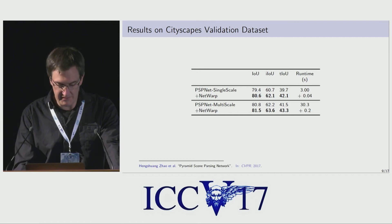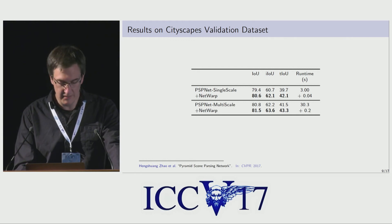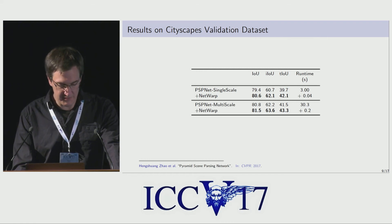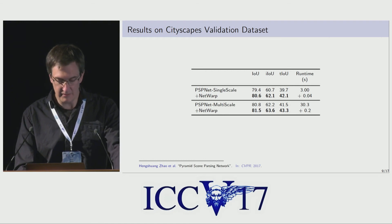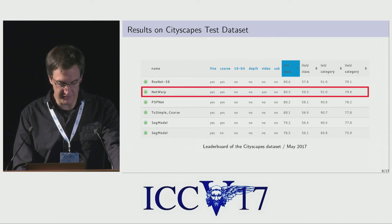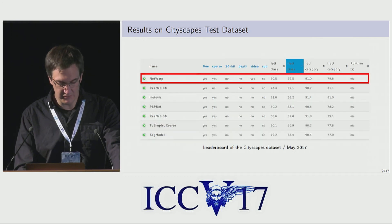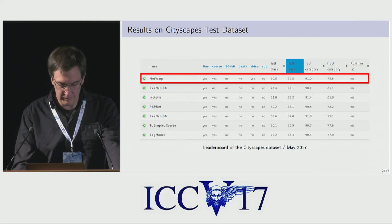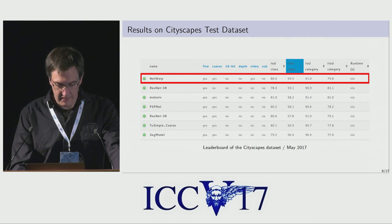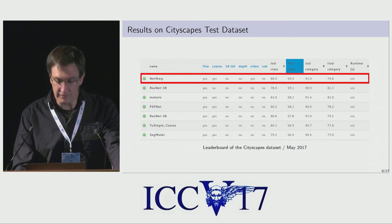Here are results on the Cityscapes validation dataset. In addition to intersection over union, we also report TriMap intersection over union and instance intersection over union. We observe similar improvements across these three metrics with only a few milliseconds of extra runtime, augmenting the pyramid scene parsing network. On the public Cityscapes leaderboard from May this year, sorted by IoU and instance IoU, we observe similar improvements over baseline CNNs on the test set. Although we have since been surpassed by a number of techniques, this remains the only technique that marked itself as a video CNN, and we hope to see similar improvements when combined with more recent models.